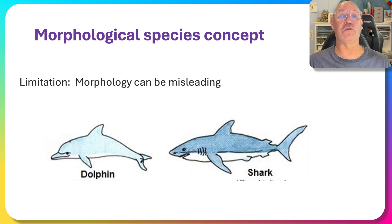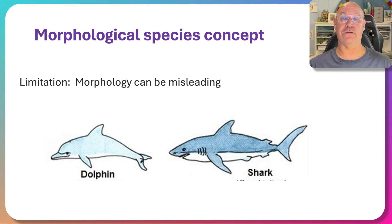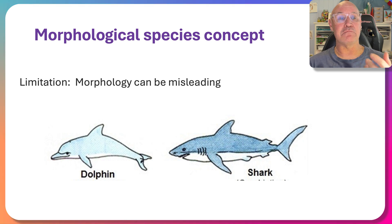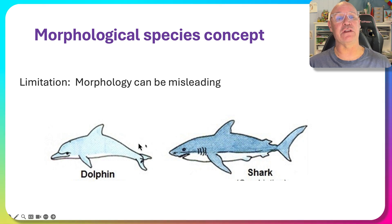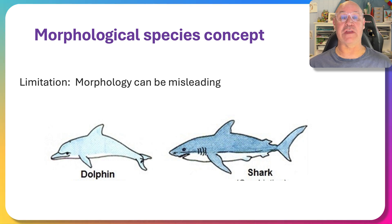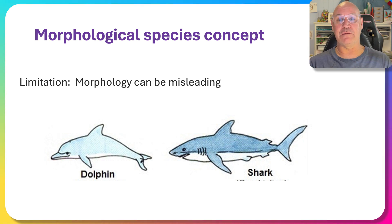However, morphology can be misleading. Take the dolphin and the shark — both are grey, have a sleek body shape, pectoral fins, dorsal fins, and similar-looking tail fins. Yet the dolphin is a mammal and the shark is a fish, so they're not closely related at all. Morphology can be quite misleading, particularly when looking at fossils that aren't particularly well preserved.